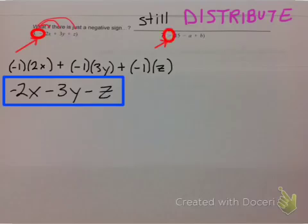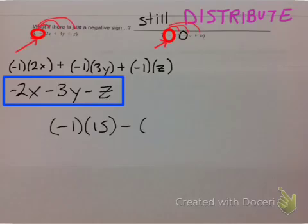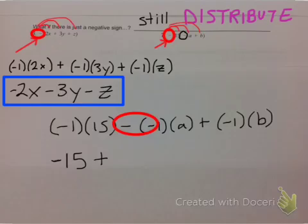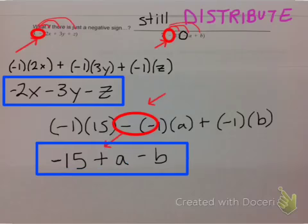For number 2, we distribute that negative again to all three terms. So we get negative 1 times 15, minus negative 1 times a, plus negative 1 times b. Negative 1 times 15 is negative 15. Once again, here's that double negative — a negative times a negative makes a positive, so positive a. And negative 1 times b is negative b. Please be very careful with those double negatives — they should turn into a positive. This is your final answer.